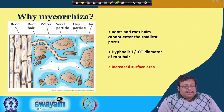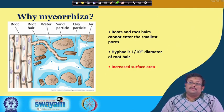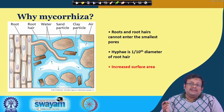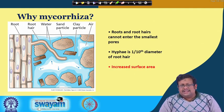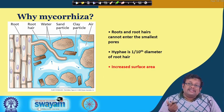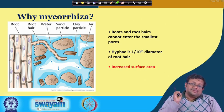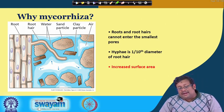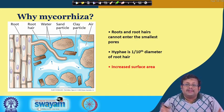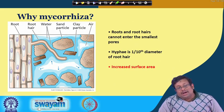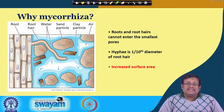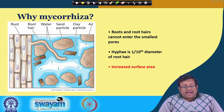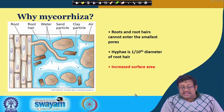Why do we need mycorrhizae? Roots and root hairs cannot enter into the smallest soil pores for extraction of nutrients — this is very important in nutrient-limited conditions where nutrients are deficient or fixed. The mycorrhizal fungi are one-tenth of the diameter of root hairs, so they can easily penetrate into very small pockets and have increased surface area to extract nutrients from places where roots cannot access. That is why mycorrhizal association is especially needed in nutrient-poor environments.